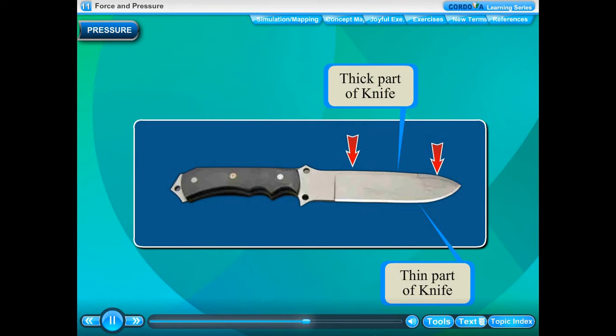The cutting edge of knives, blades, axes, etc. are sharpened. As the cutting edge is sharpened, the area of contact decreases and hence, pressure exerted by them increases.